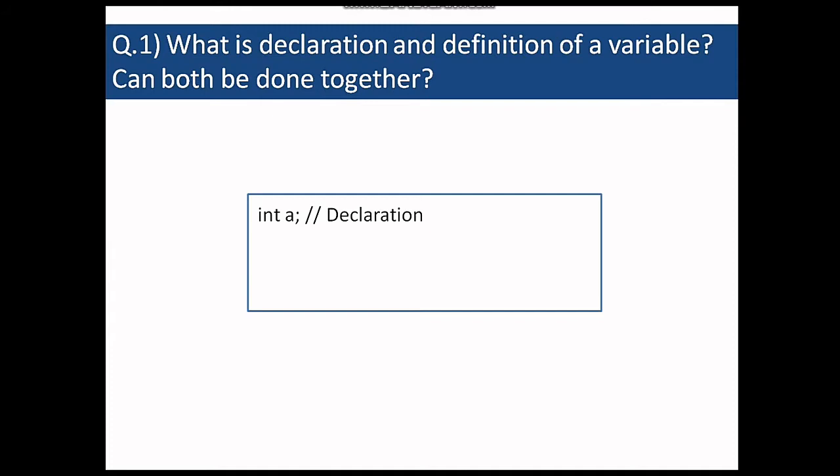We have not assigned any value so it is called declaration, but when we say a equal to 3 we are defining a with some value. So we are assigning a value and it is called definition. And yes, we can combine both declaration and definition together by saying int a equal to 3. So here we have combined two statements into one.